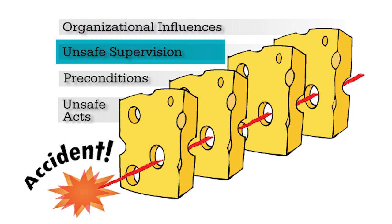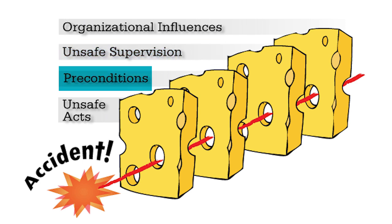Layer 2: Unsafe Supervision. Next, we've got the supervisors — the middle management. They're supposed to keep things running smoothly, but if they're not paying attention or providing proper oversight, you get more holes. Layer 3: Preconditions for Unsafe Acts — the everyday working conditions. Are the staff well-rested and well-trained? Is the equipment up to snuff? Are all procedures tested and solid? Are there backup systems in place for both technology and personnel? The more you answer no, the more holes you have in the cheese.